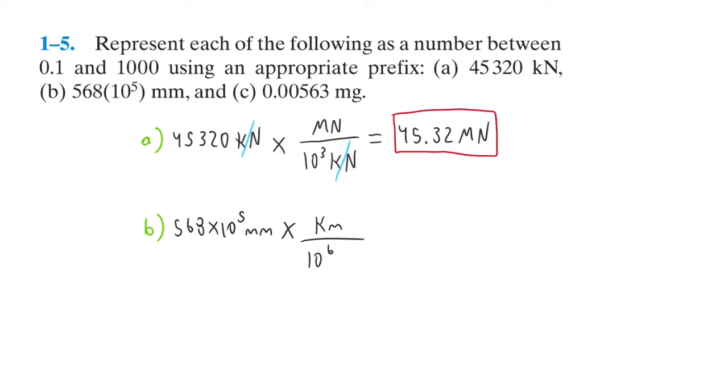Because for every kilometer, there's 10 to the 6 millimeters. So millimeters cancel, and the top one cancels.